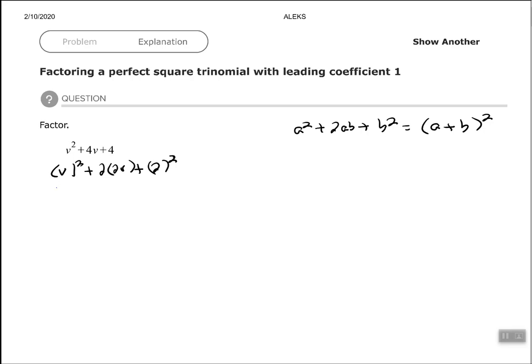then we can quickly factor it to a plus b squared. So again, v is in the place of a from our formula, 2 is in the place of b.